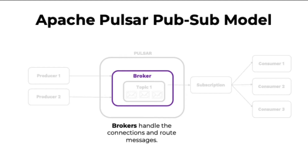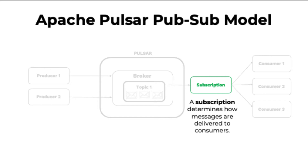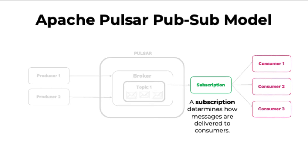Brokers are responsible for receiving and sending all the data. The producers and consumers don't need to know about each other or interact with each other — the broker handles all the communications. A subscription is a configuration rule that determines how messages are delivered. Once a consumer has a subscription, it can receive messages.